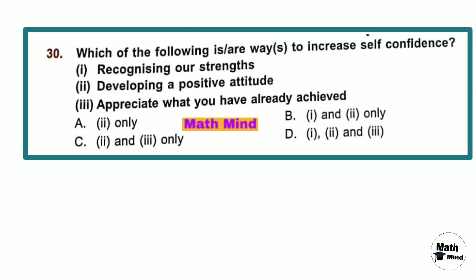Question number 30: Which of the following are ways to increase self-confidence? Statement 1 — recognizing our strengths; Statement 2 — developing a positive attitude; Statement 3 — appreciate what you have already achieved. Option D is correct — statements 1, 2, and 3 all help to increase self-confidence.